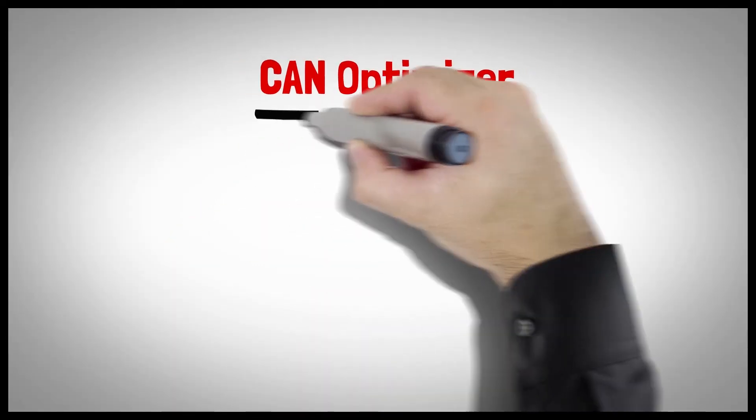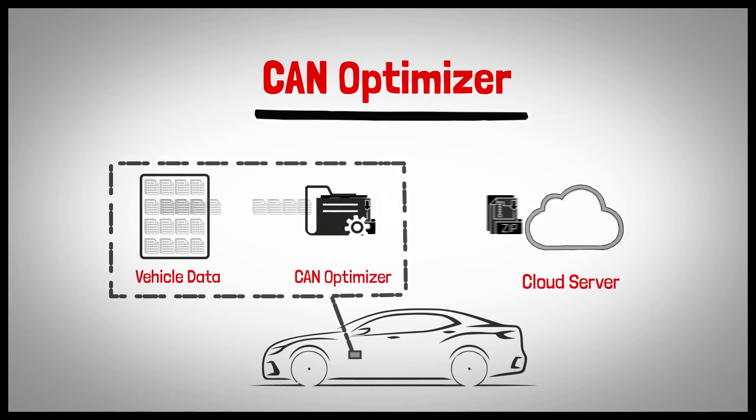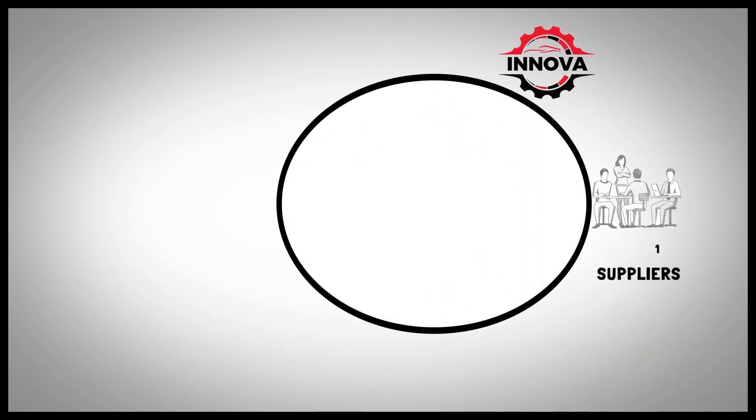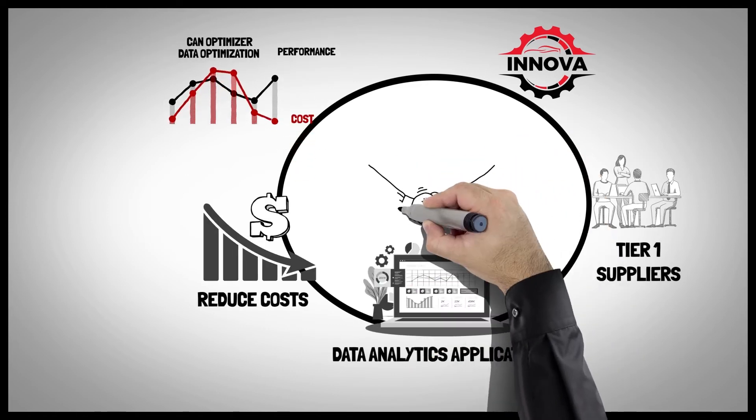CAN Optimizer is a data compression and optimization solution that enables efficient delivery of CAN bus data to the cloud. It helps OEM and Tier 1 suppliers create new data analytics applications that reduce costs, improve performance, and enable new business models.